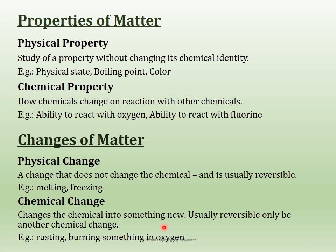A chemical change transforms the substance into something new and is usually irreversible — you can only reverse it through another chemical change. For example, rusting changes iron into iron oxide, turning the silvery-gray color to orange. Burning a candle in oxygen is another example — you won't get the candle back after it's burned. Properties of matter and changes in matter are closely related.